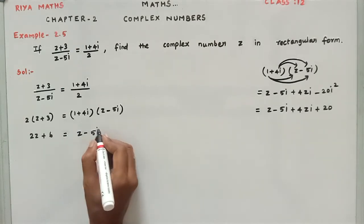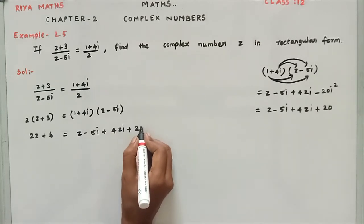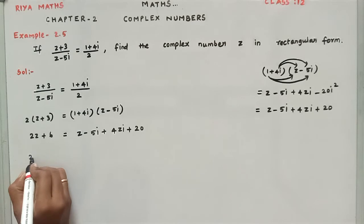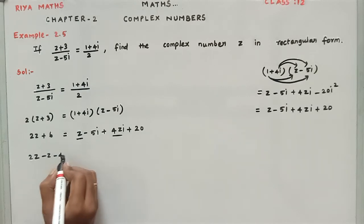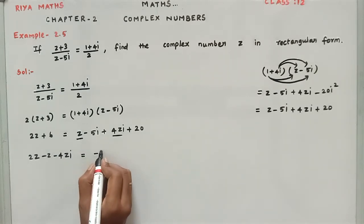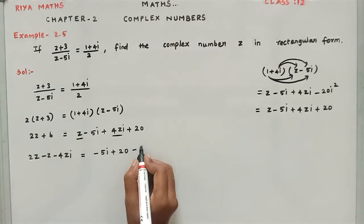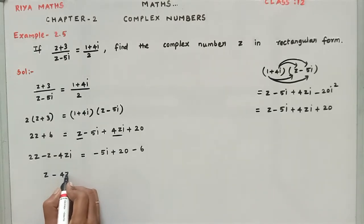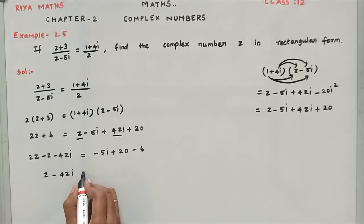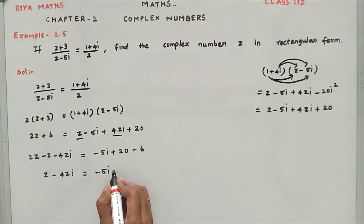We will bring z to one side. So 2z - z - 4zi = -5i + 20 - 6. The left side: 2z minus z is z, so z - 4zi. The right side: 20 minus 6 is 14, so equals 14 - 5i.